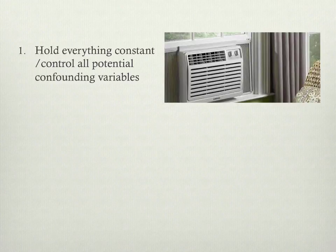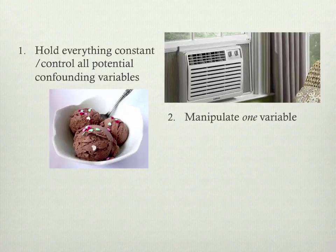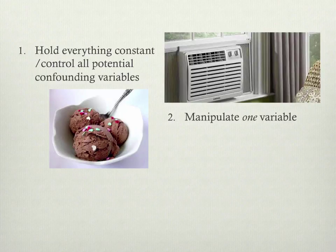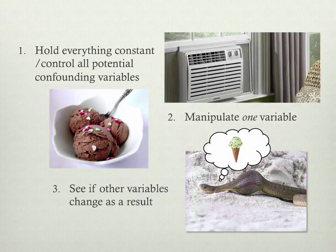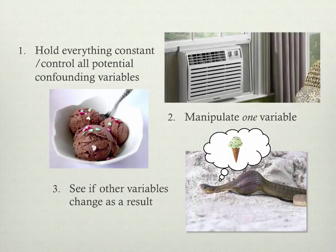Then, once everything is being held constant, you pick one thing and manipulate one variable. In this case, we bring a bunch of participants into the room and give some of them ice cream. Then we see if the box of snakes in the room is going to make a beeline for those participants and bite them — in other words, we see if the other variable changes as a result. We hold everything constant so nothing's changing, then manipulate just one thing and see if that causes a change in other things. Because there's no influence of extraneous or confounding variables, we can make a conclusion about the one thing causing the other.